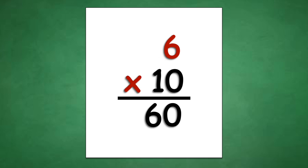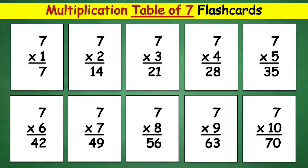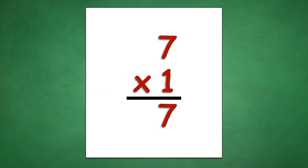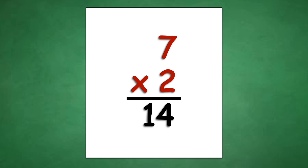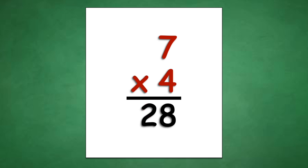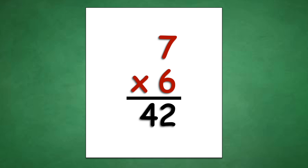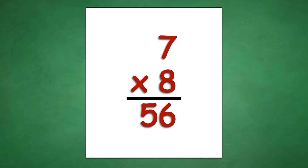6 times 10 equals 60. Table of 7: 7 times 1 equals 7, 7 times 2 equals 14, 7 times 4 equals 28, 7 times 5 equals 35, 7 times 6 equals 42, 7 times 7 equals 49, 7 times 8 equals 56, 7 times 9 equals...